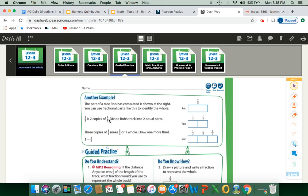So I thought this guided practice, like we do similar to in class, in person, was a great example. We've seen some problems like this before, but I'm going to use it to get you warmed up to do these problems on your own. So this example says the part of a race Bob has completed is shown at the right. And you can use fractional parts like this to identify the whole. So this is what we have so far, two-thirds. And I'm going to go ahead and draw a line so I know, and that's what they did right here.